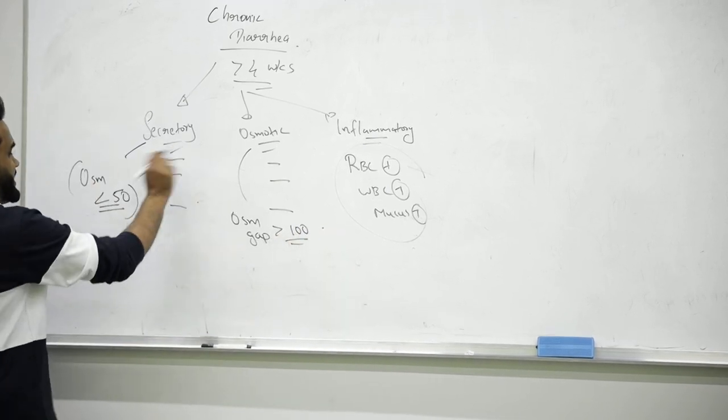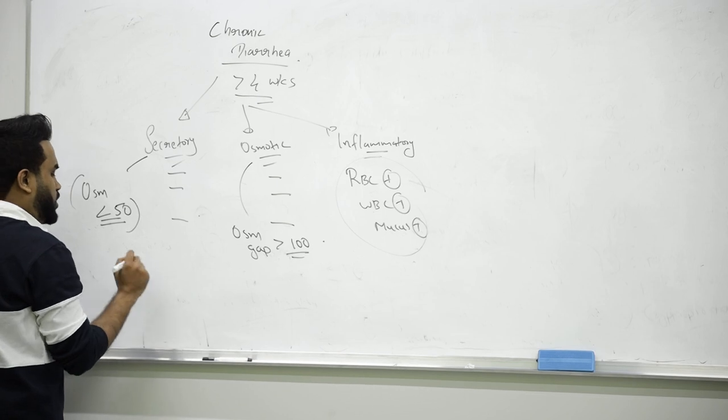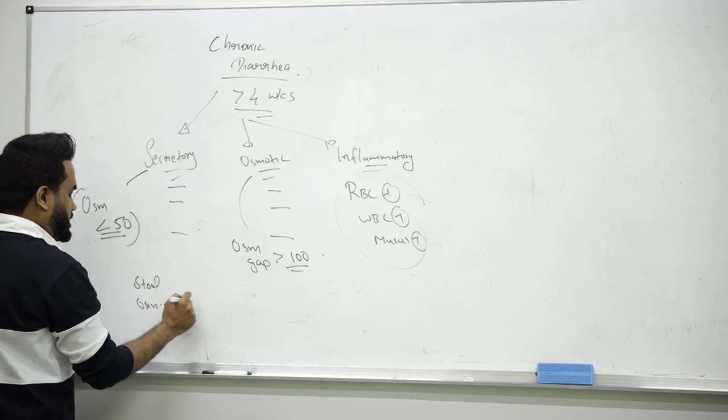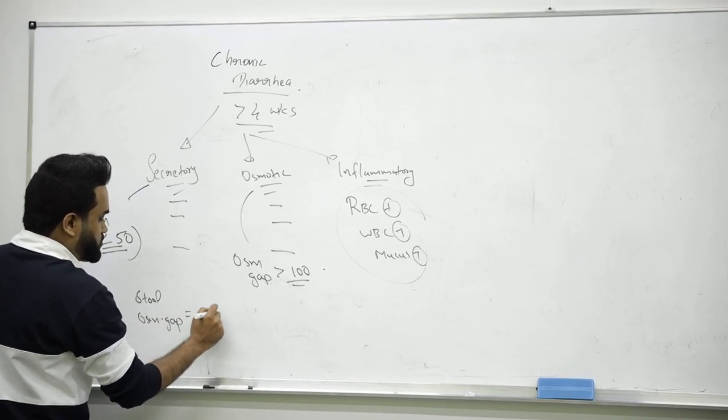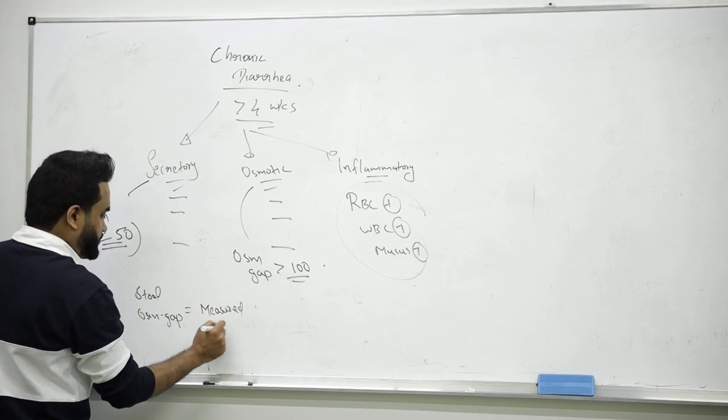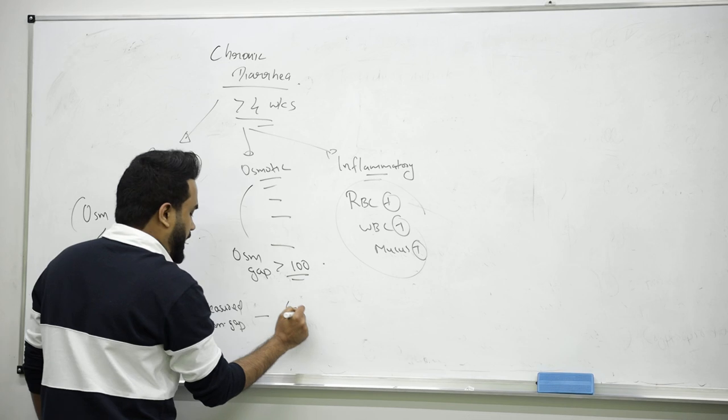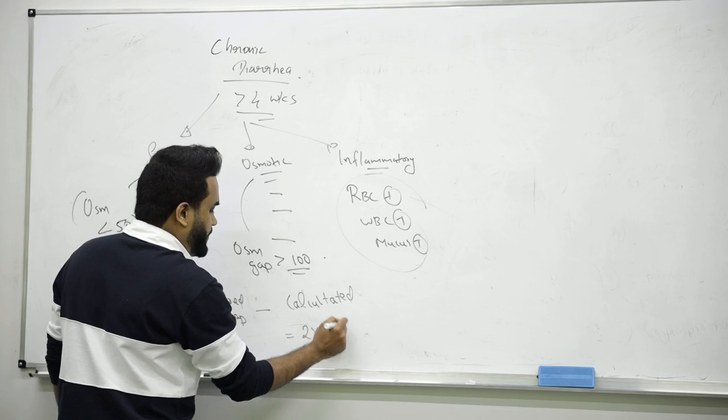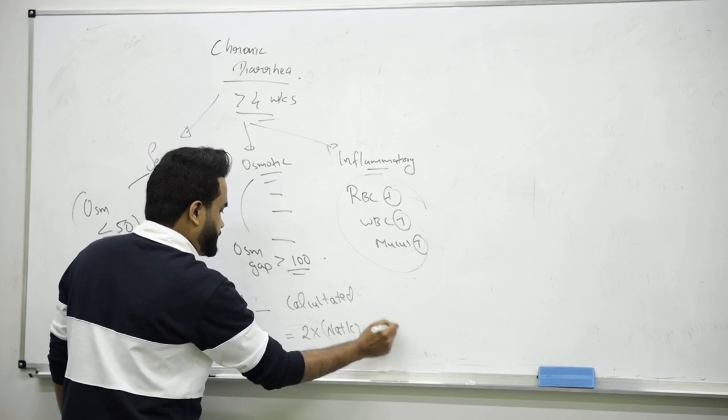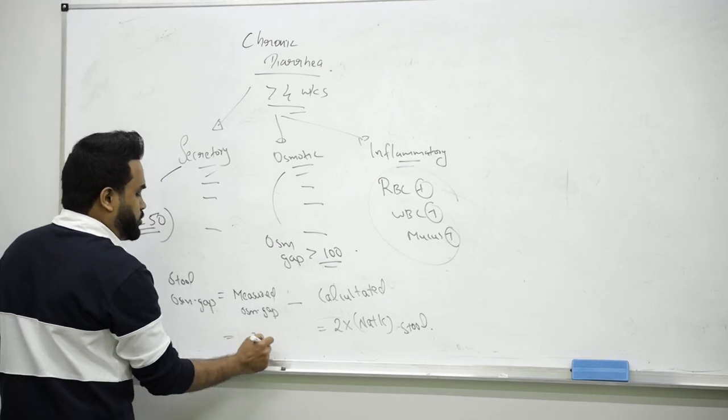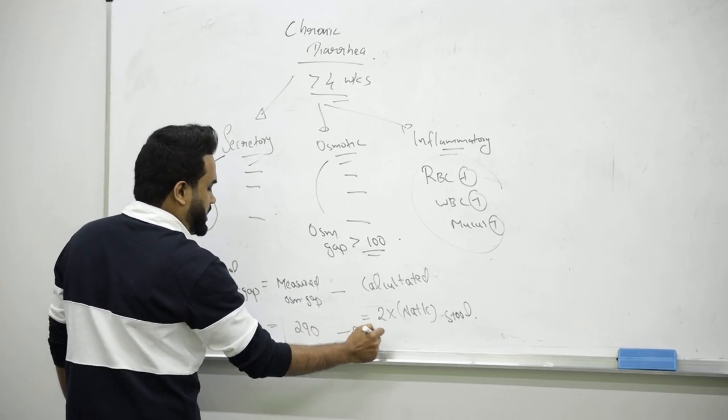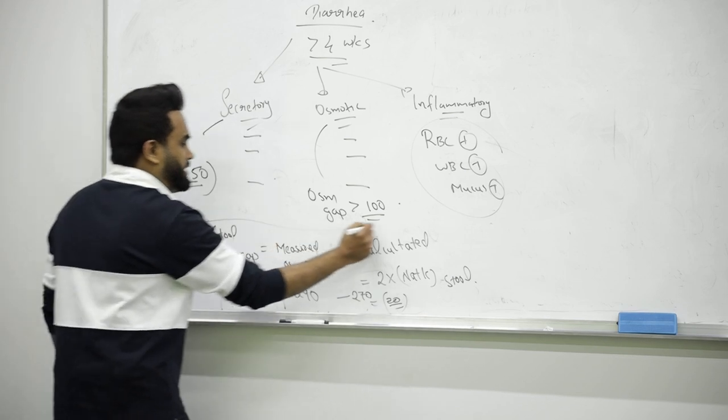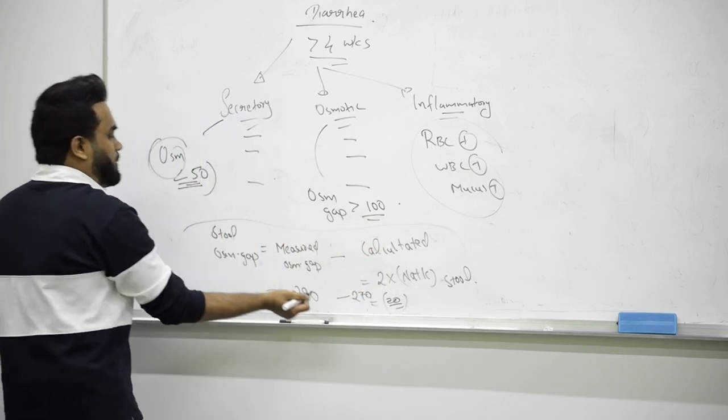How do you find out the osmolar gap? Stool osmolar gap equals measured osmolar gap minus calculated. Calculated equals two times sodium plus potassium in stool. Measured will be around 290 every time, so two times around 270 may equal to 20 as an average value. If the value is less than 50, it's secretory. More than 100, it's osmotic. In between is called normal.